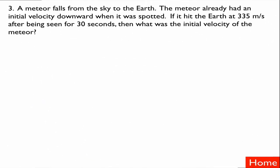Problem number three. A meteor falls from the sky to the Earth. The meteor already has an initial velocity downward when it was spotted. If it hit the Earth at 335 meters per second after being seen for 30 seconds, then what was the initial velocity of the meteor? We're neglecting air resistance. Since the meteor falls, that's an implied given of negative 9.8 meters per second squared acceleration. It hits the Earth at 335 meters per second — that's a final velocity. And 30 seconds is the time.